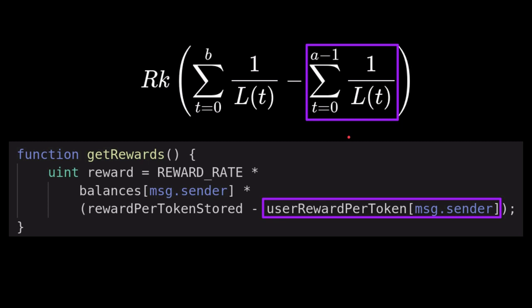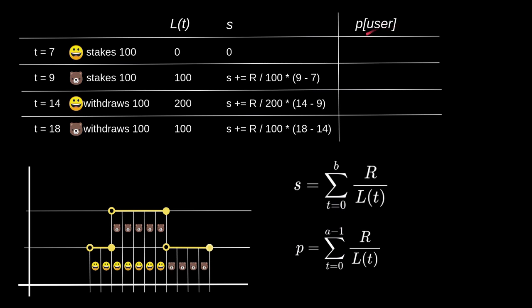Now let's calculate the right side of the equation. This value is essentially the same as `s`, except it's stored per user whenever a user interacts with the smart contract. We call it `p(user)`. At t equals 7, `p(alice)` stores the current `s`, which is 0. At t equals 9, `p(bob)` stores the current `s` value. At t equals 14, `p(alice)` stores the current `s` value. At t equals 18, `p(bob)` stores the current `s` value.